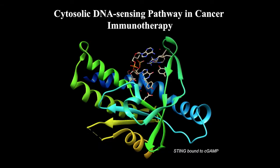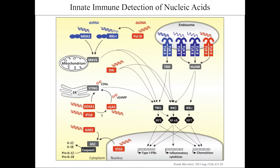Moving from TLRs to the cytosolic DNA sensing pathway in cancer immunotherapy, I'll focus on STING agonists. Similar to TLRs — receptors on the cell surface that recognize pathogens and damage-associated molecular patterns — there is the possibility of DNA and RNA being present in the cytoplasm of the cell, mostly in the context of viral infection. Various machinery in the cytoplasm detects these floating double-stranded DNA and RNA.